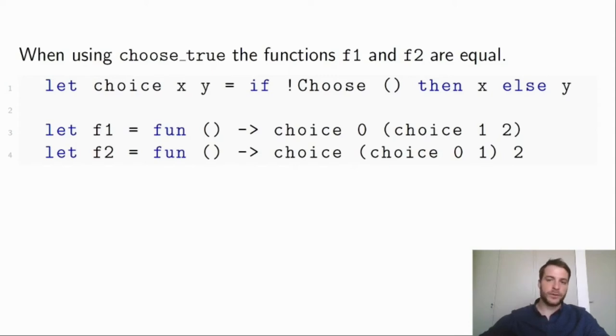And in that case, choice always chooses the left argument. So the functions f1 and f2 are equal since they both always return zero.